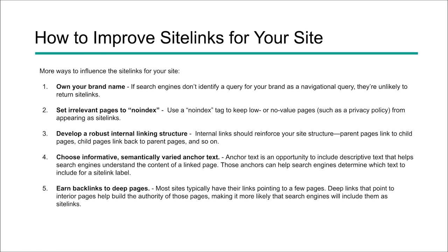To wrap this all up, here are five ways to really improve your site links. Number one: own your brand name. Make sure Google can identify your brand, understand it's a brand, so it knows it's a navigational query and can show site links. Number two: make sure irrelevant pages like your privacy policy are set to no-index — they don't need to be in the search results. Number three: develop a robust internal linking structure. Internal links reinforce your site structure and the popularity of certain concepts — link from parent pages and child pages to create deep linking.